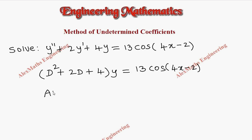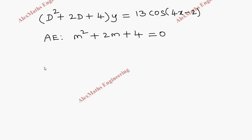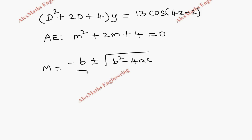Now, the auxiliary equation will be m² + 2m + 4 = 0. The product is 4 and sum is 2, so we cannot factorize. We have to use the quadratic formula: m = (−b ± √(b² − 4ac)) / 2a.